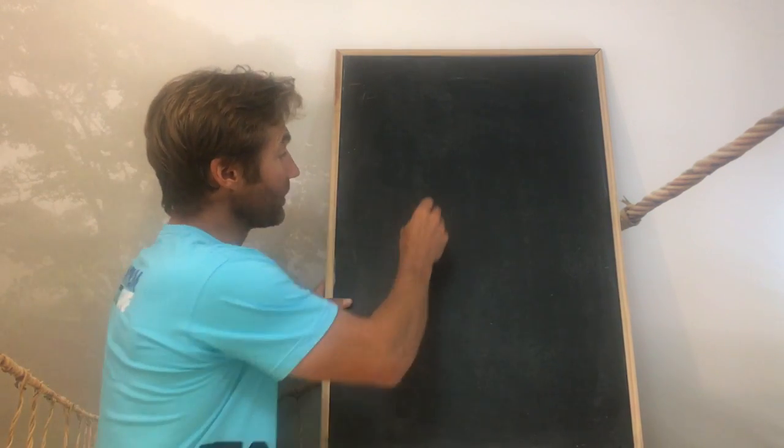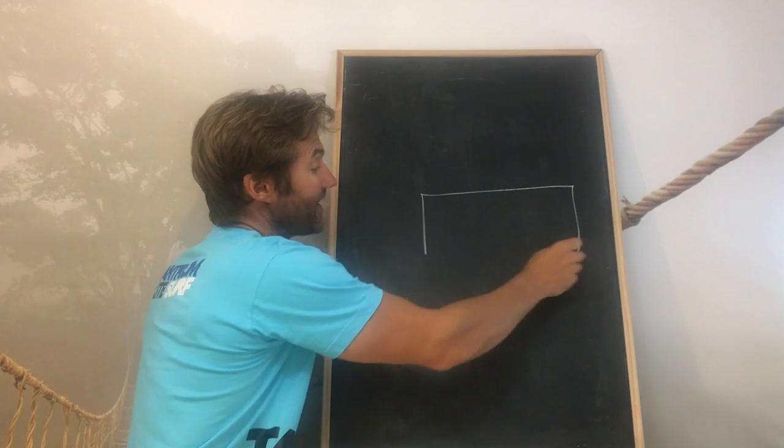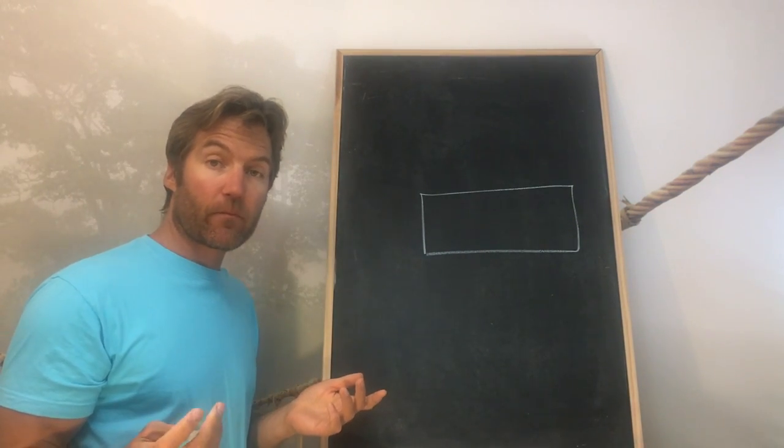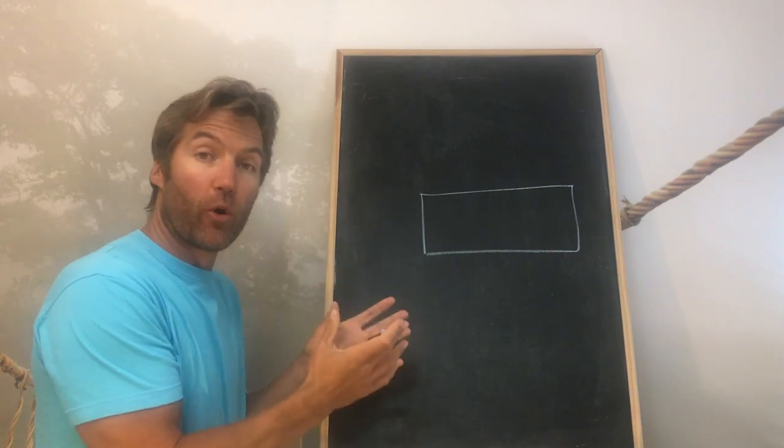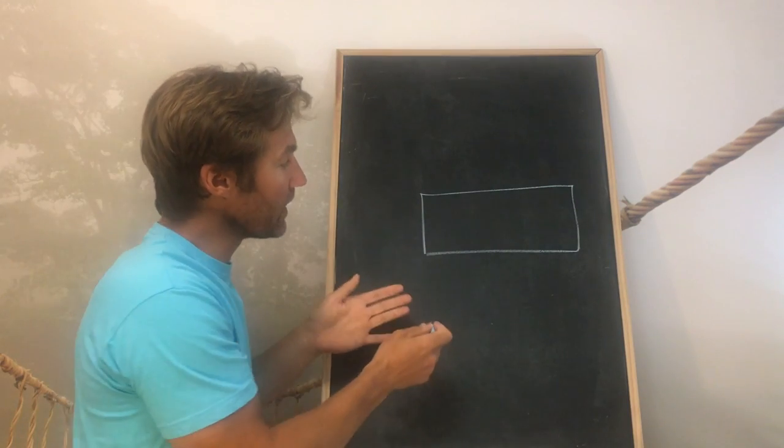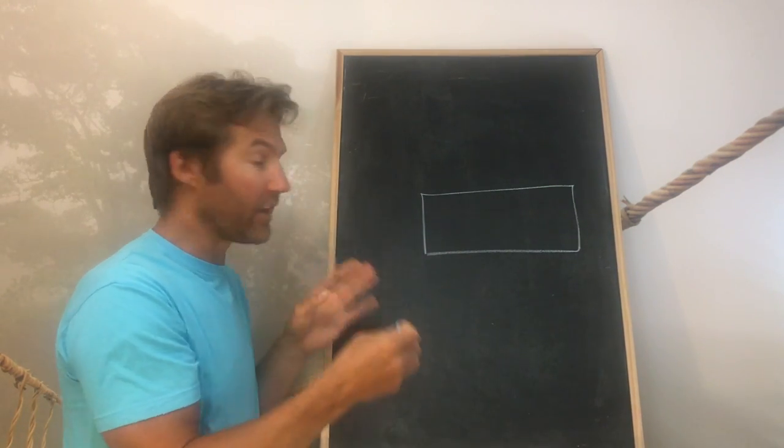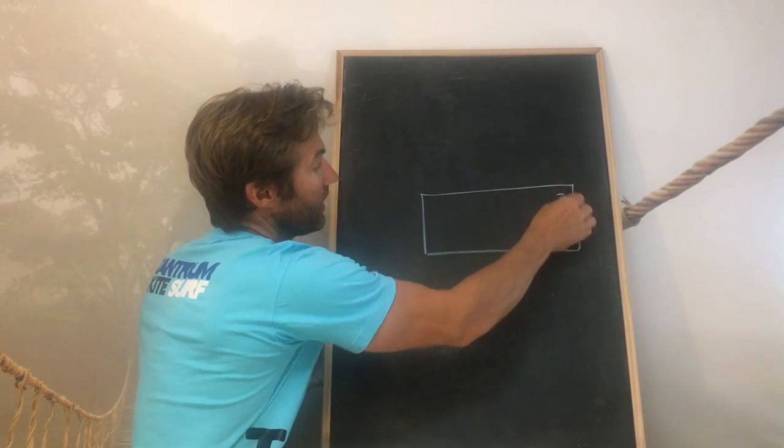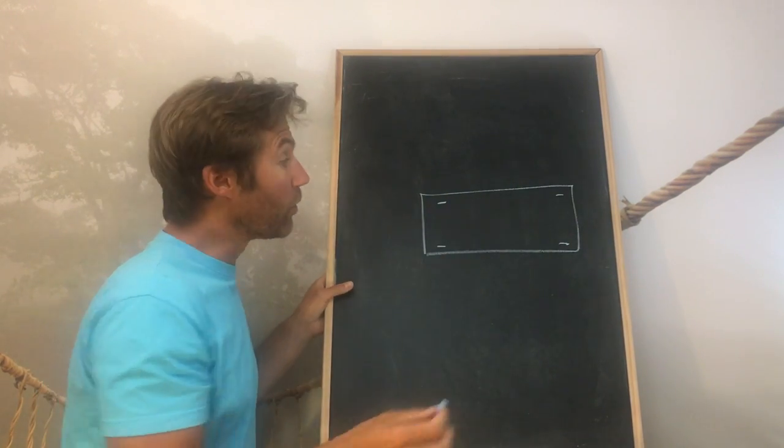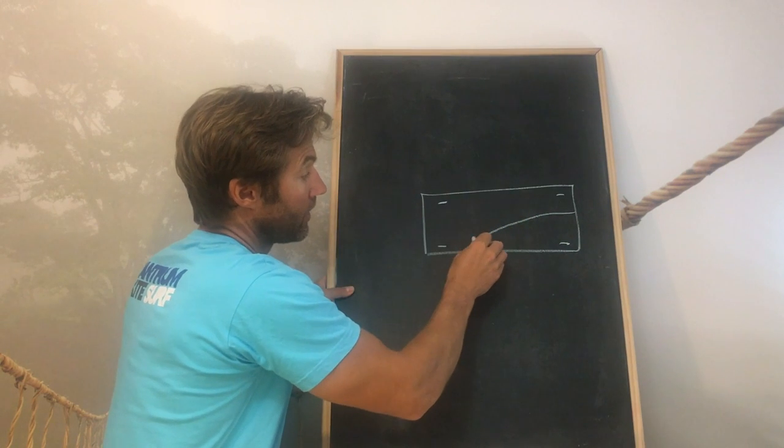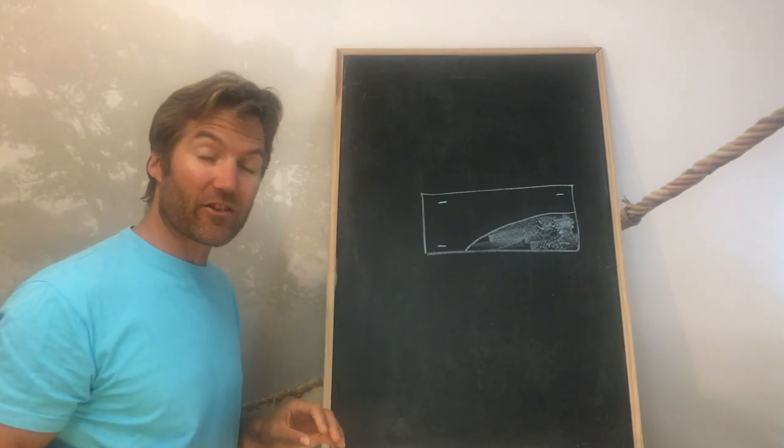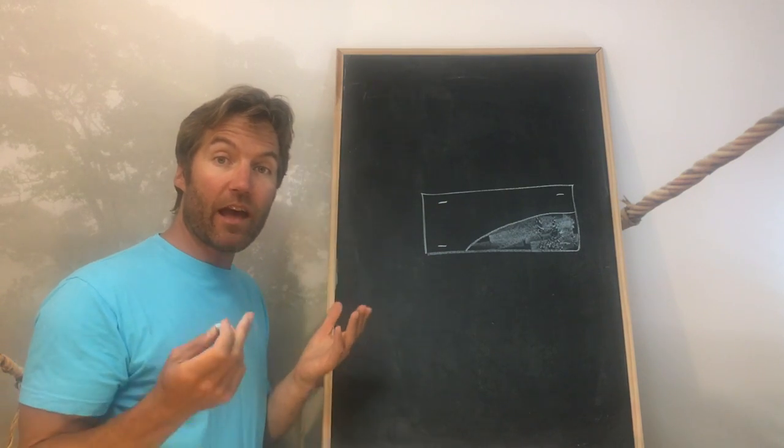So the first thing we talked about on the podcast was this idea of the wetted area. What we're talking about is the area of the board which is actually in the water. If you imagine this is a twin tip and you're looking up underneath it, you get your fins here. The area of the board that might actually be in the water at any one time is that part there. That's what's called your wetted area.